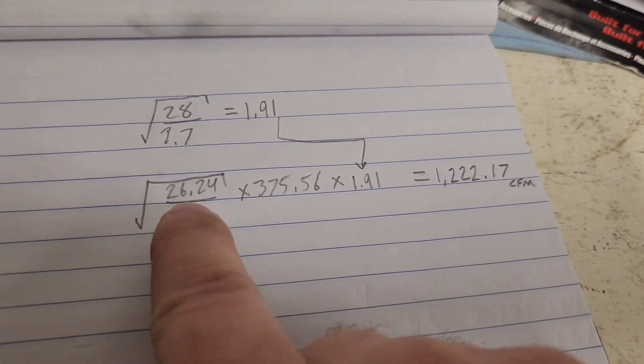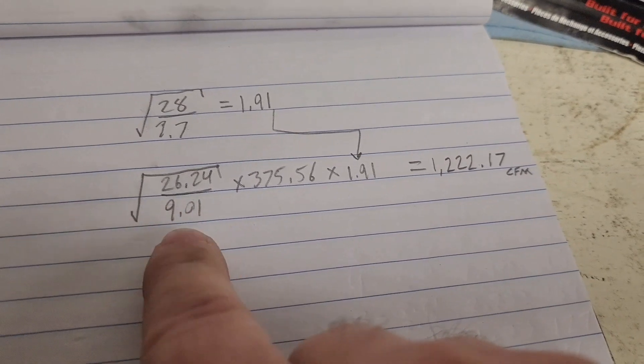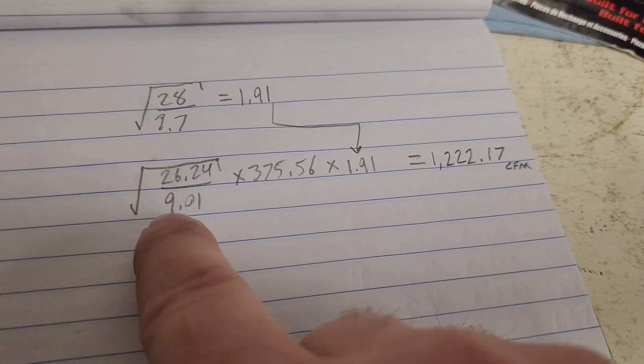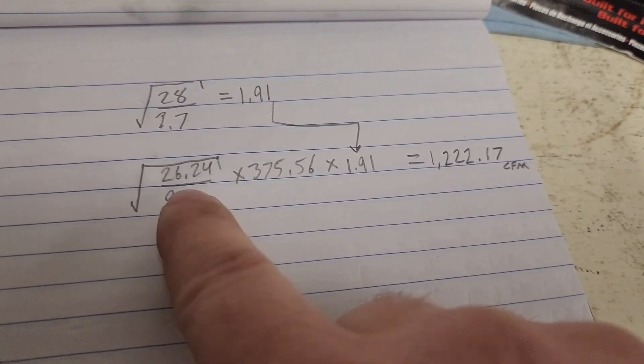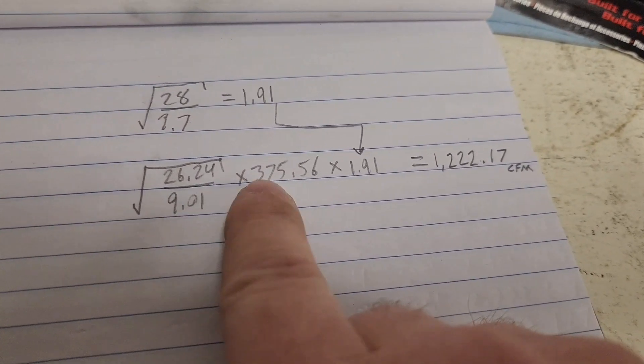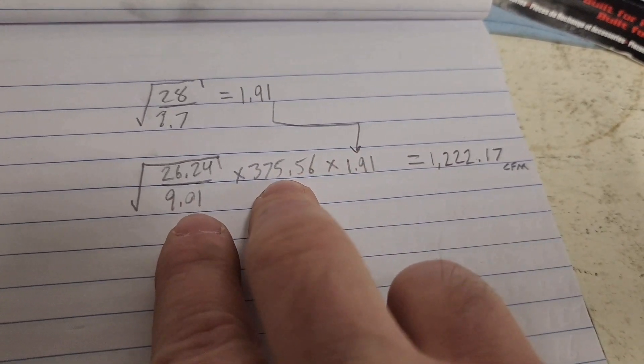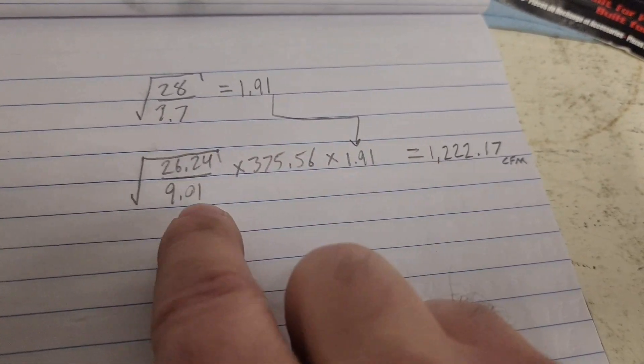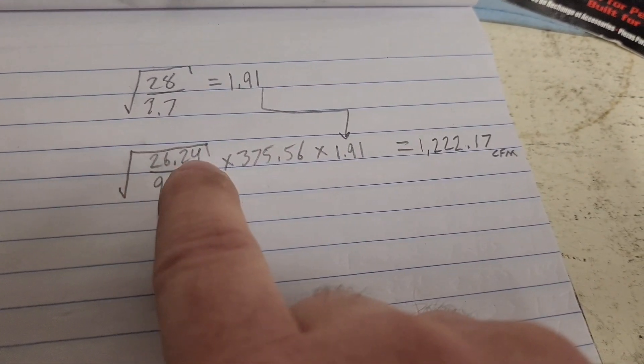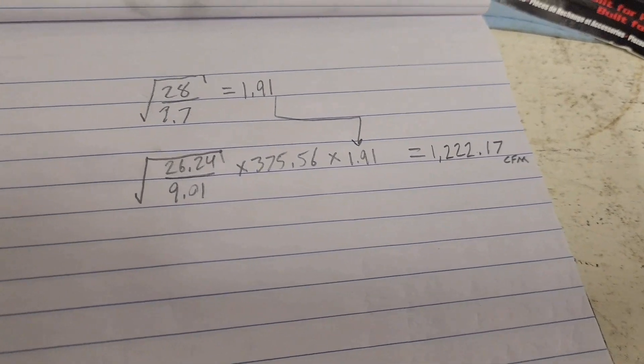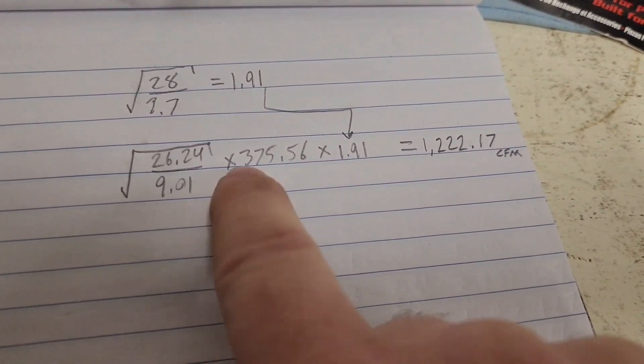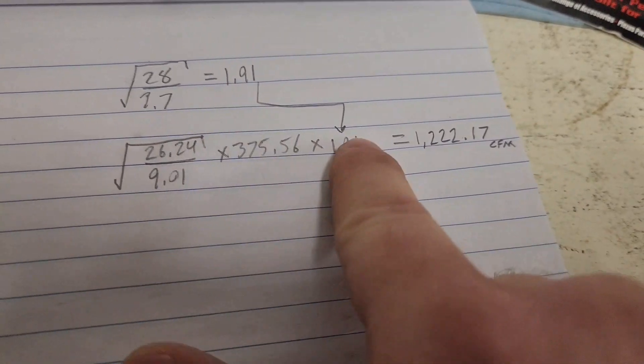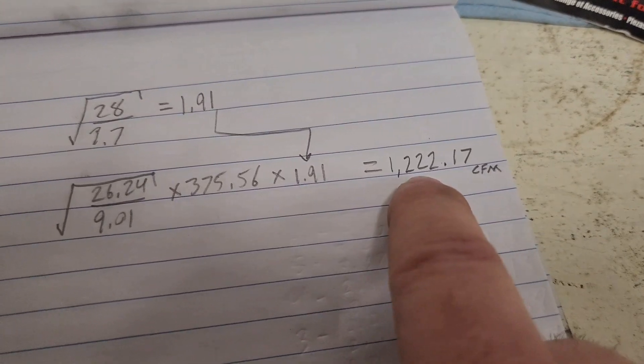So we had 26.24 inches of water across the orifice. Divide that by 9.01, which is this 9.01 and 375.56 are my calibration for my bench. If you don't know what those are, go back to my previous flow bench videos. So this is the differential pressure across the orifice. 26.24 inches of water divided by 9.01, 375.56 CFM times my correction factor. It's about 1,222 CFM.